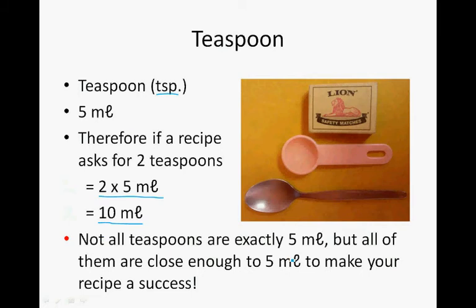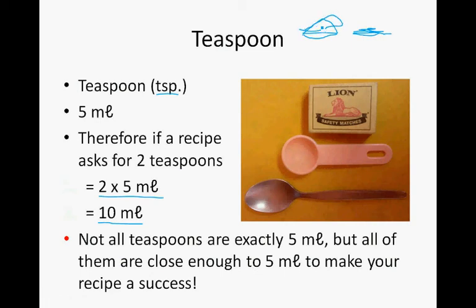Not all teaspoons are exactly 5 milliliters, but all of them are close enough to 5 milliliters to make your recipe a success. Just remember, when a recipe asks for a teaspoonful, if this is the top part of the teaspoon, we shouldn't heap it up — that would be about 7 milliliters. You take your teaspoon and flatten out what you put on it, so you get to more or less 5 milliliters.